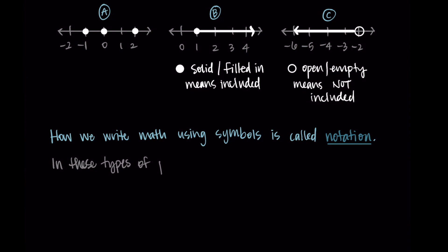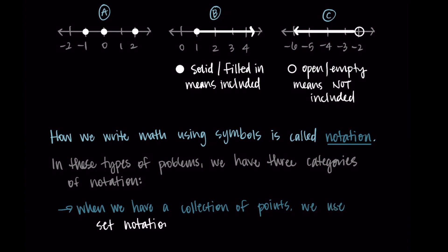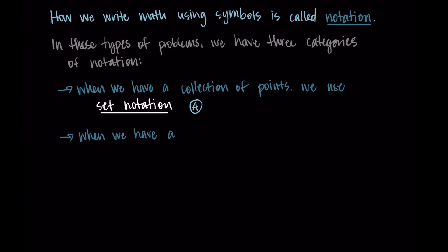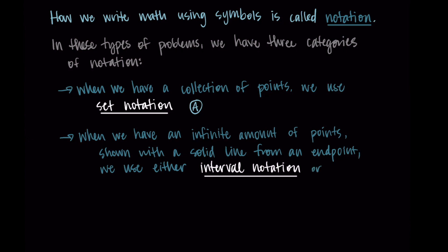So let's get going on interval and inequality notation. In these types of problems, I typically refer to three different categories of notation. The first is when we have a collection of points — just an individual finite number of points — and we use set notation for that, as seen in example a. But in many cases we have an infinite amount of points, like in examples b or c. In those situations, we use either interval notation or inequality notation.